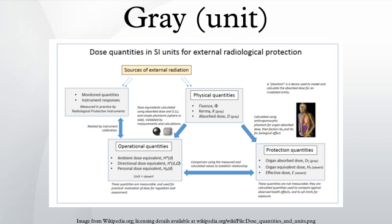The average radiation dose from an abdominal X-ray is 0.7 mGy, that from an abdominal CT scan is 8.0 mGy, that from a pelvic CT scan is 6 mGy, and that from a selective CT scan of the abdomen and the pelvis is 14 mGy.